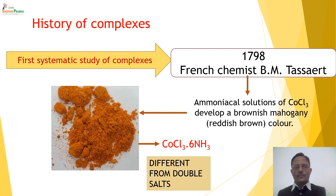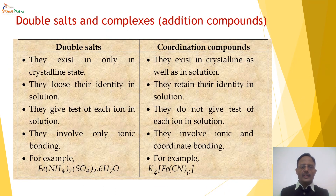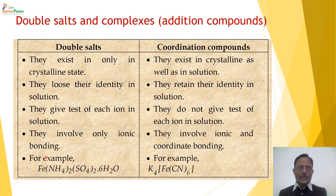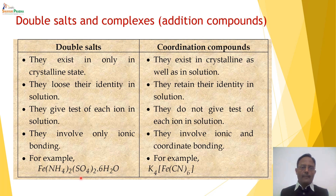This complex was found to be different from the double salts known at that time. Let us compare a double salt and a coordination compound. Take the example of ferrous ammonium sulfate as a double salt, and potassium hexacyanoferrate as a coordination compound. The double salt is formed by mixing ferrous sulfate and ammonium sulfate in solution; on evaporation, we get crystals of ferrous ammonium sulfate.